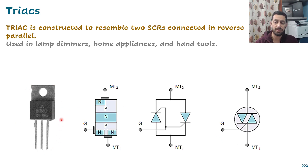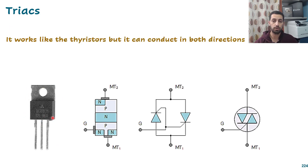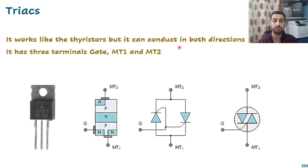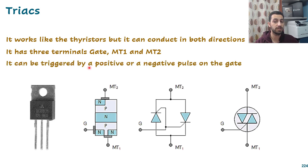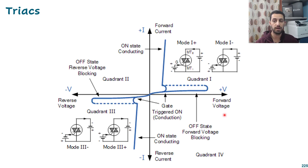The triac package looks like transistors and thyristors, but you can identify it by the part number. It works like thyristors but can conduct in both directions, which is more important for some applications. It has three terminals: gate, MT1, and MT2, and it can be triggered by both positive and negative pulses.